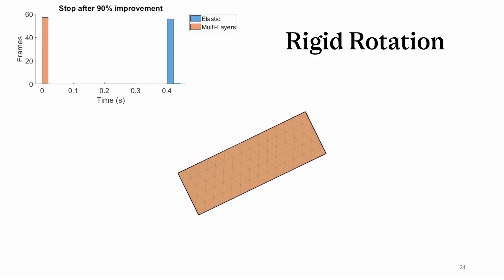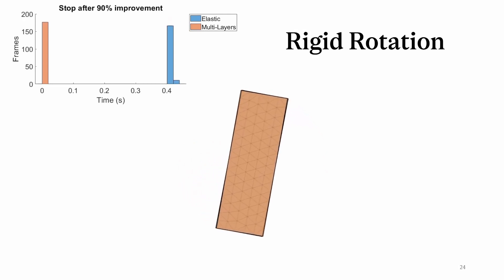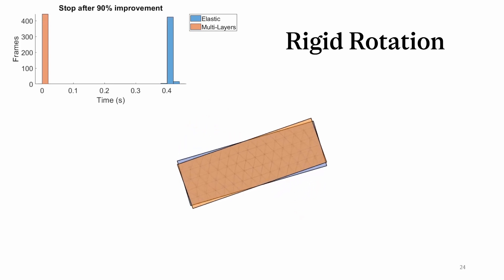We start with the easiest scene. A purely rigid rotation instantly converges to the best solution at the first iteration, making our solver much faster than standard elastic simulations. We also better preserve momentum as we are not affected by the dissipative effect of the constraint solve.